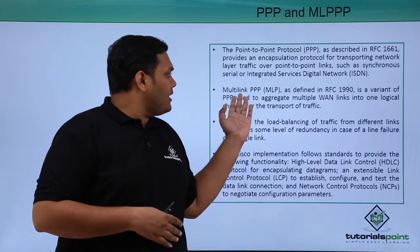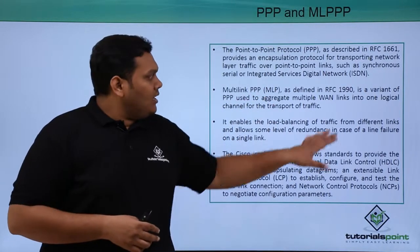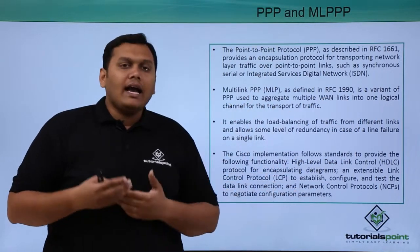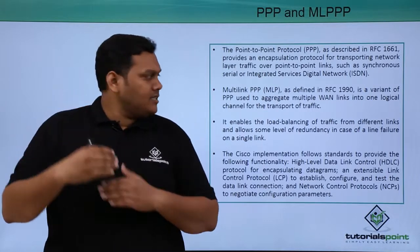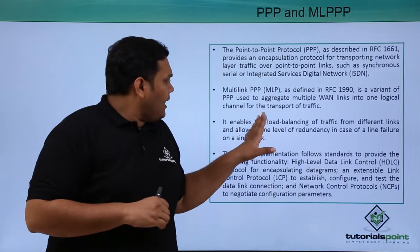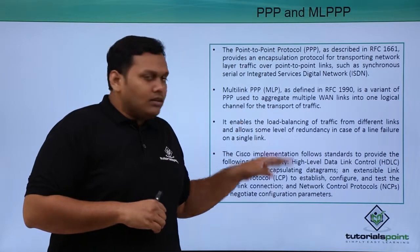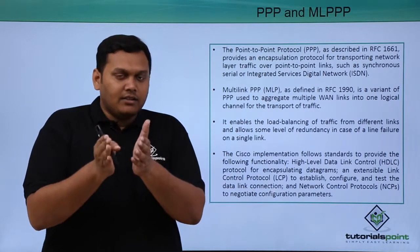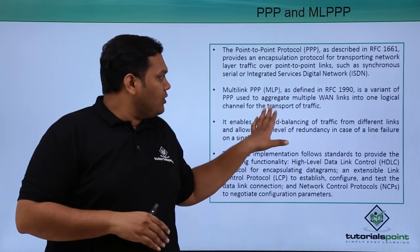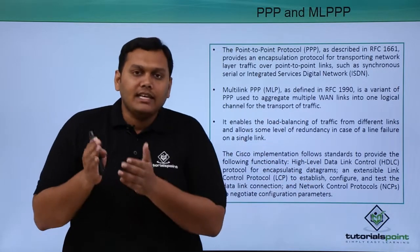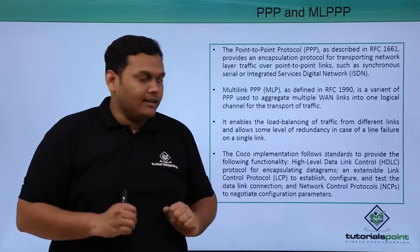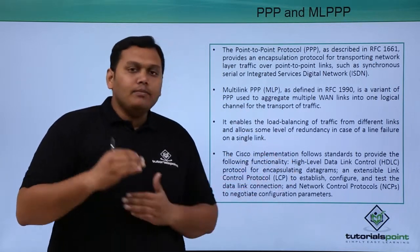Multilink PPP, as defined in RFC 1990, is a variant of PPP used to aggregate multiple physical links — also called WAN links — into one logical unit, or channel. Traffic is transported through that single logical channel, which enables load balancing of the traffic.